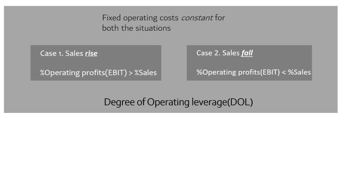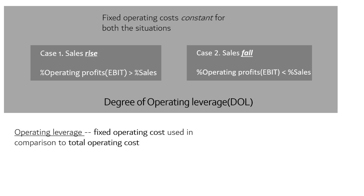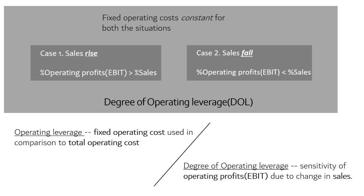Don't confuse operating leverage with degree of operating leverage. The first tells you how much of the fixed cost is used in comparison to the company's total operating cost, whereas the second measures the sensitivity of operating profits.